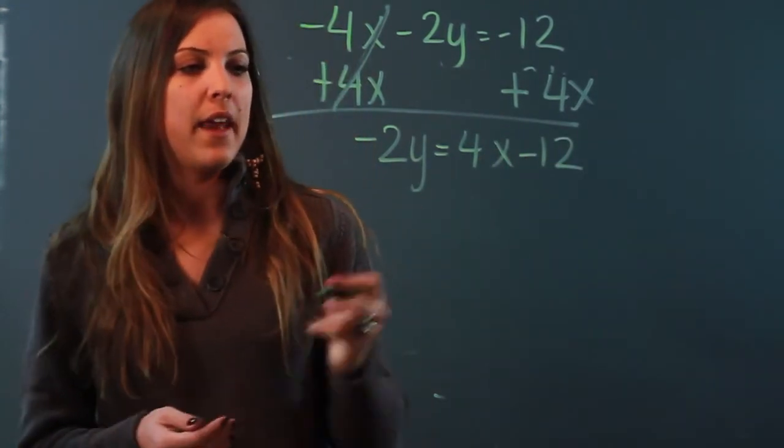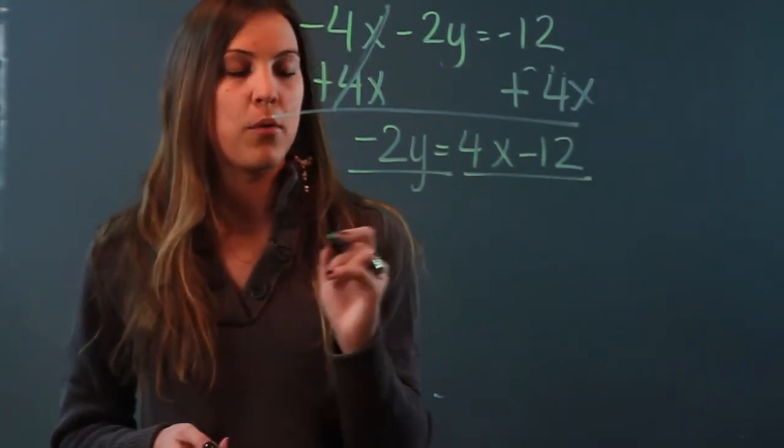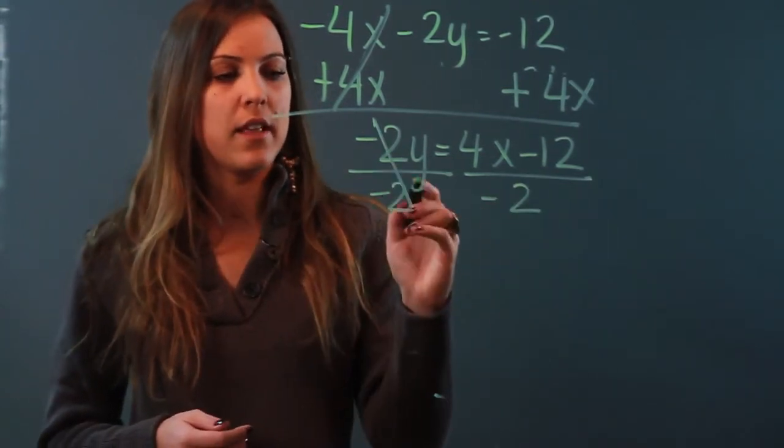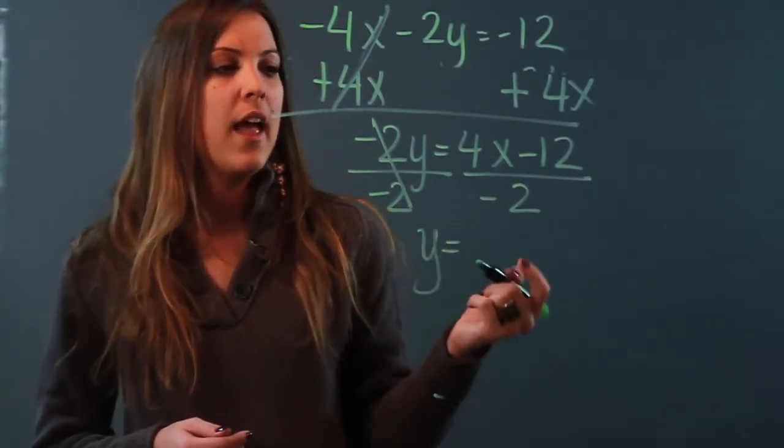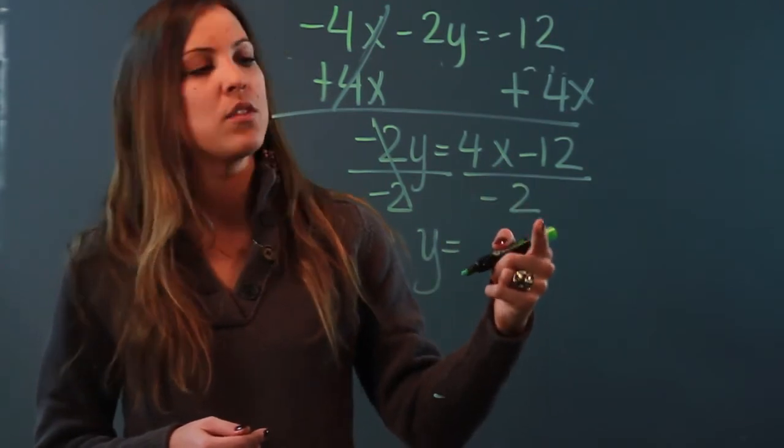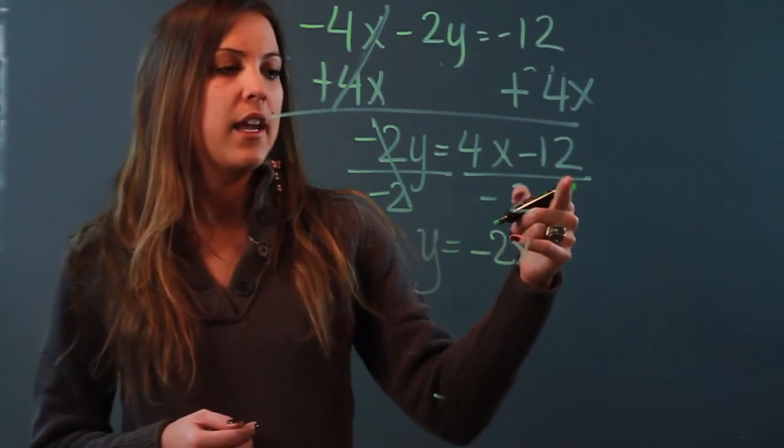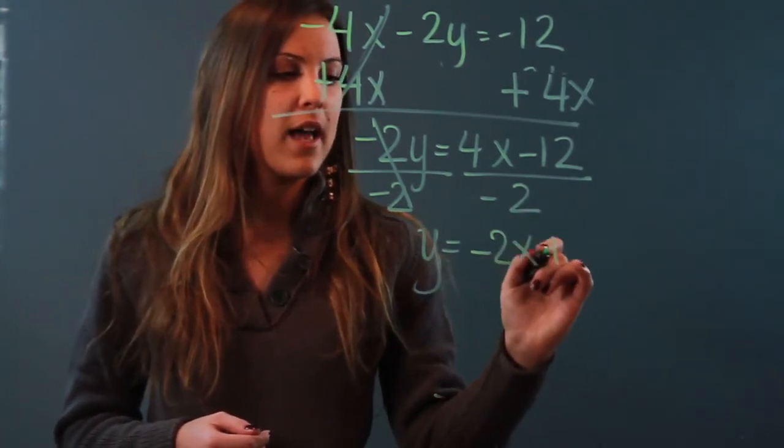And then I'm going to have to divide both sides of the equation by negative 2. And when I do that these will cancel out and I'll get y equals and now I have to divide each term by negative 2. So I get 4 divided by negative 2 is negative 2x and negative 12 divided by negative 2 is positive 6.